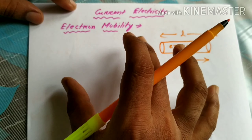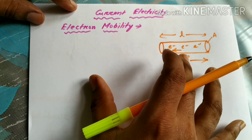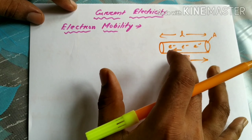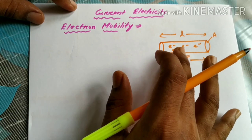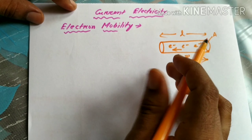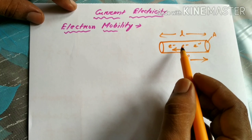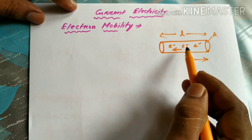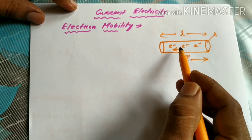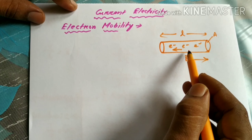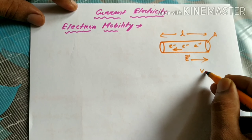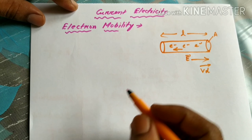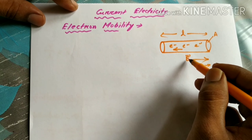The conductivity of any material is due to the mobility of the electron. In this case, we will consider free electrons. These free electrons move with drift velocity towards the left direction. Now we apply electric field E.